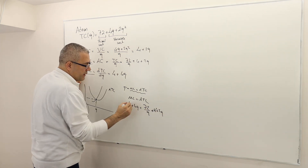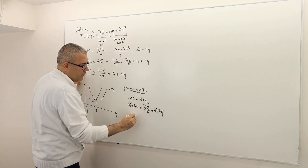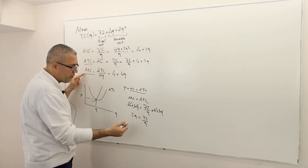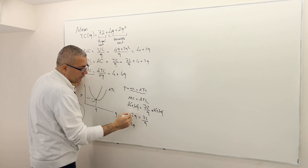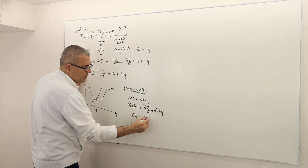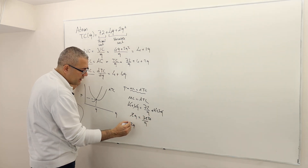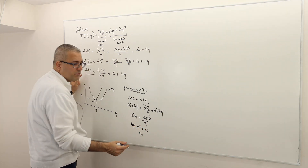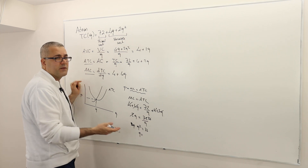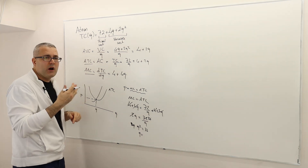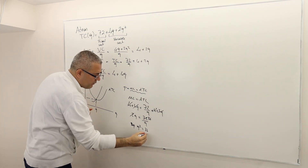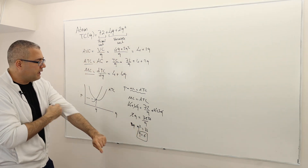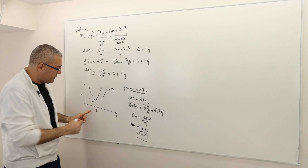From q² = 36, q = ±6. Since quantity cannot be negative, q = 6. So Adnan will produce six units of output in the long run.